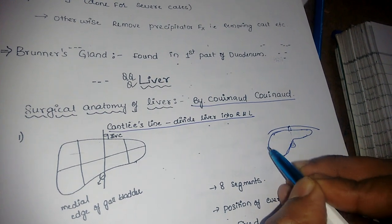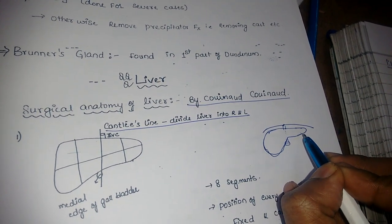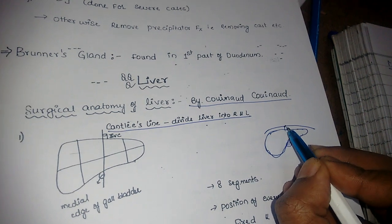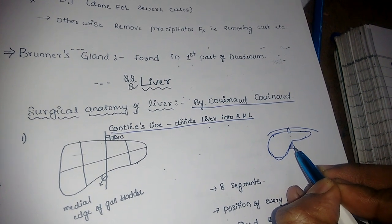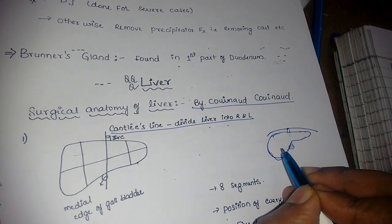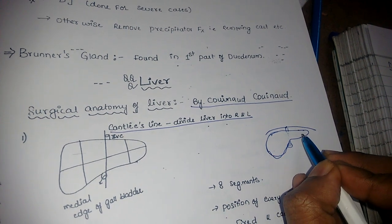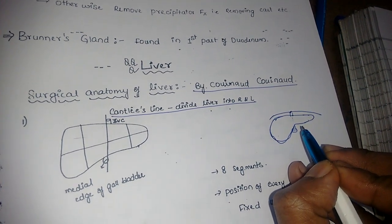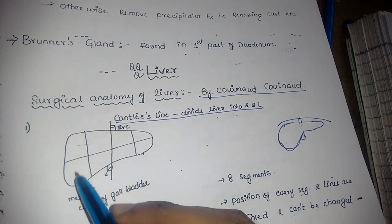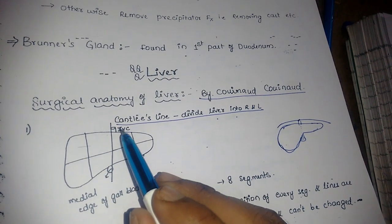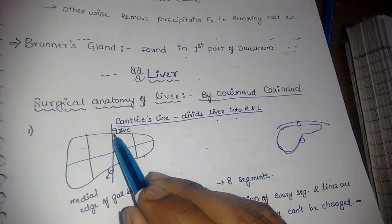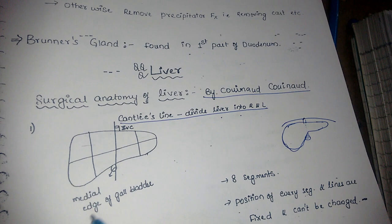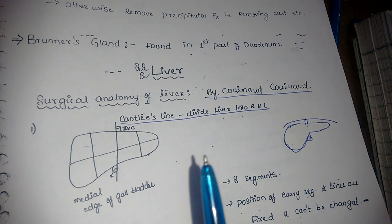Here we have the diaphragm, and below that is the liver. You have the inferior vena cava and the gallbladder. If you draw a line from the inferior vena cava to the gallbladder, we can divide the liver into the right and the left lobe. In this diagram, a line is drawn between the inferior vena cava to the medial edge of the gallbladder.